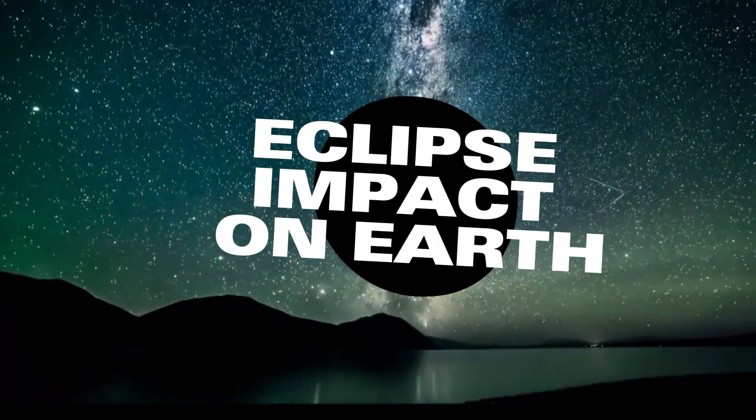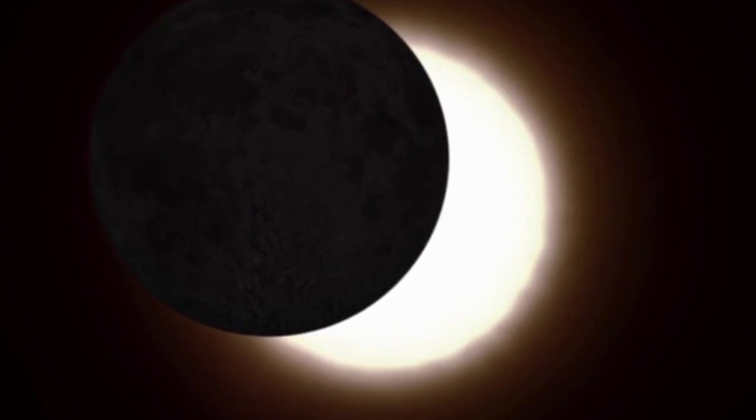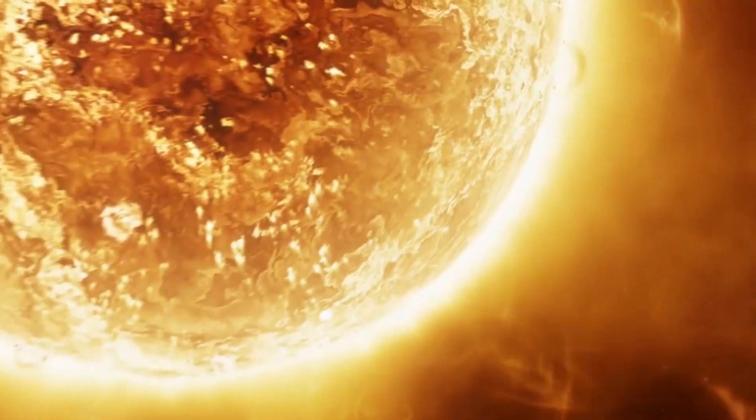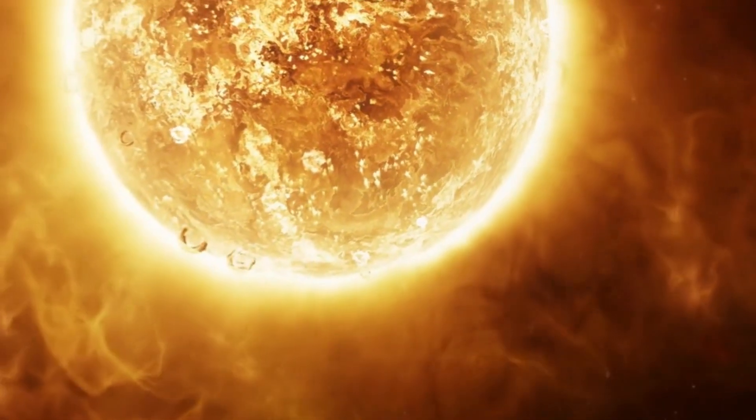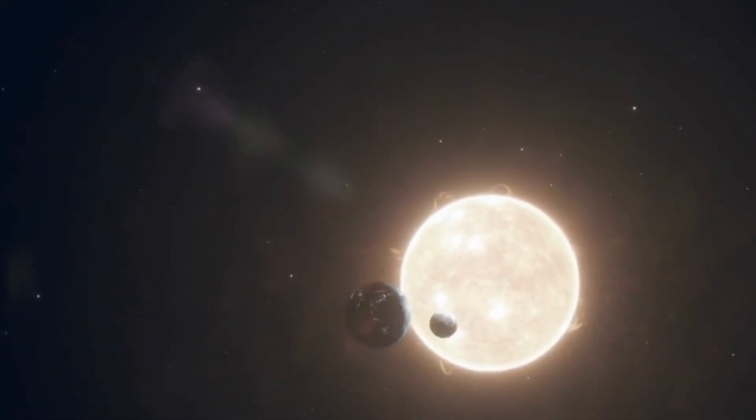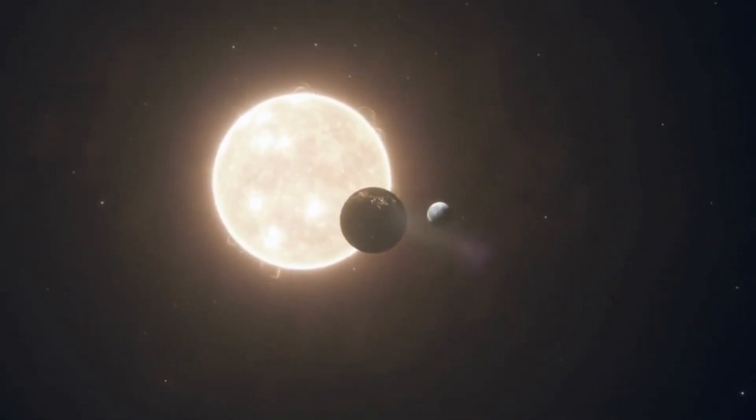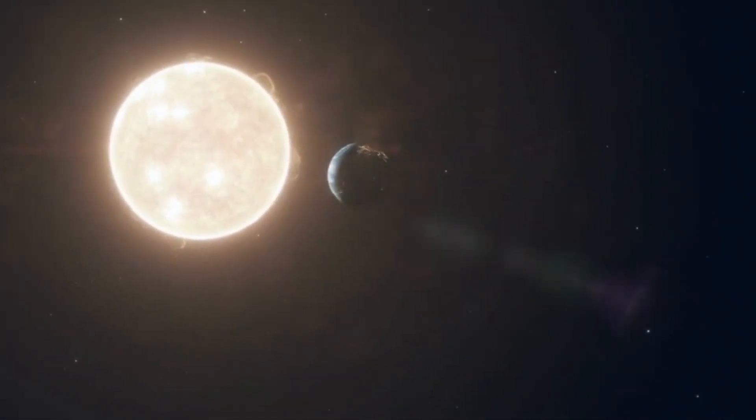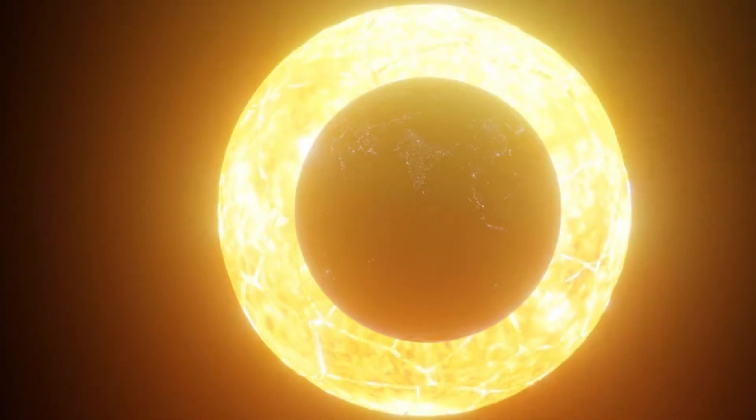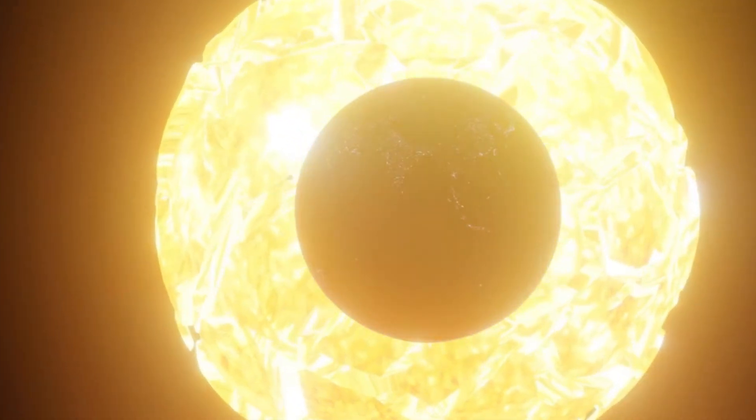Question number four. The impact of eclipses on Earth. Eclipses have a profound impact on our planet, influencing everything from wildlife behavior to atmospheric conditions. During a solar eclipse, temperatures can drop suddenly as the sun's light is blocked, affecting local climates. Animals may exhibit unusual behaviors, mistaking the sudden darkness for nightfall.